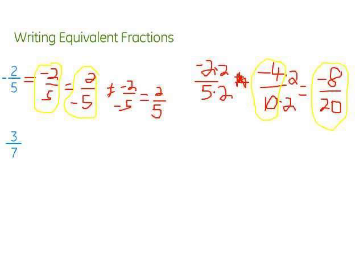Let's take a look at 3 sevenths. In this one, we don't have any negatives, so we don't have to worry about that stuff. To get an equivalent fraction, again, we can multiply by 2 on the top and the bottom.